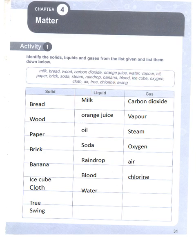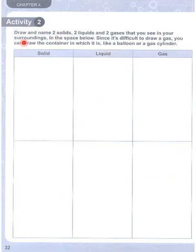First activity done. Second activity: draw and name two solids, two liquids, and two gases that you see in your surroundings in the space below. Since it's difficult to draw gas, you can draw the container in which it is, like a balloon or a gas cylinder.